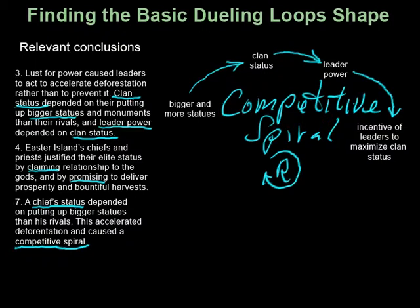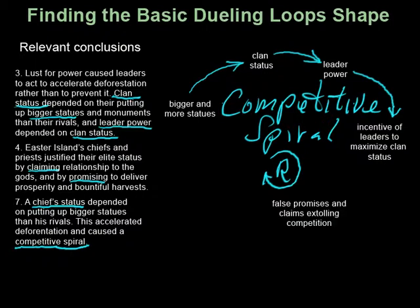Now we take a big mental leap and take Diamond's conclusions a little further. What are these claims and promises? Well, for one thing, they're false. As far as science has been able to prove, no one can justify their elite status by claiming relationships to the gods, because there is no evidence that any gods exist. And if the leader's policies are causing deforestation, like they were in Easter Island, then an endless stream of prosperity and bountiful harvests is a false promise — it's not going to happen. So let's add this node and this relationship: this incentive to maximize status is going to lead to false promises and claims extolling the value of clan competition to build bigger and more statues.